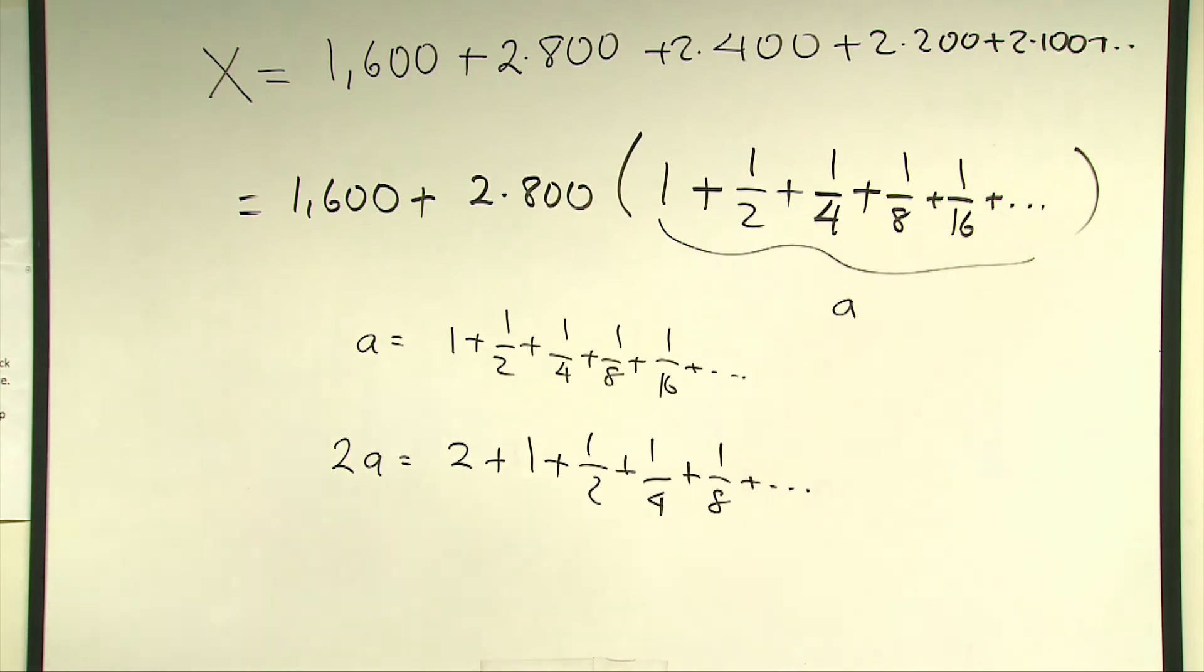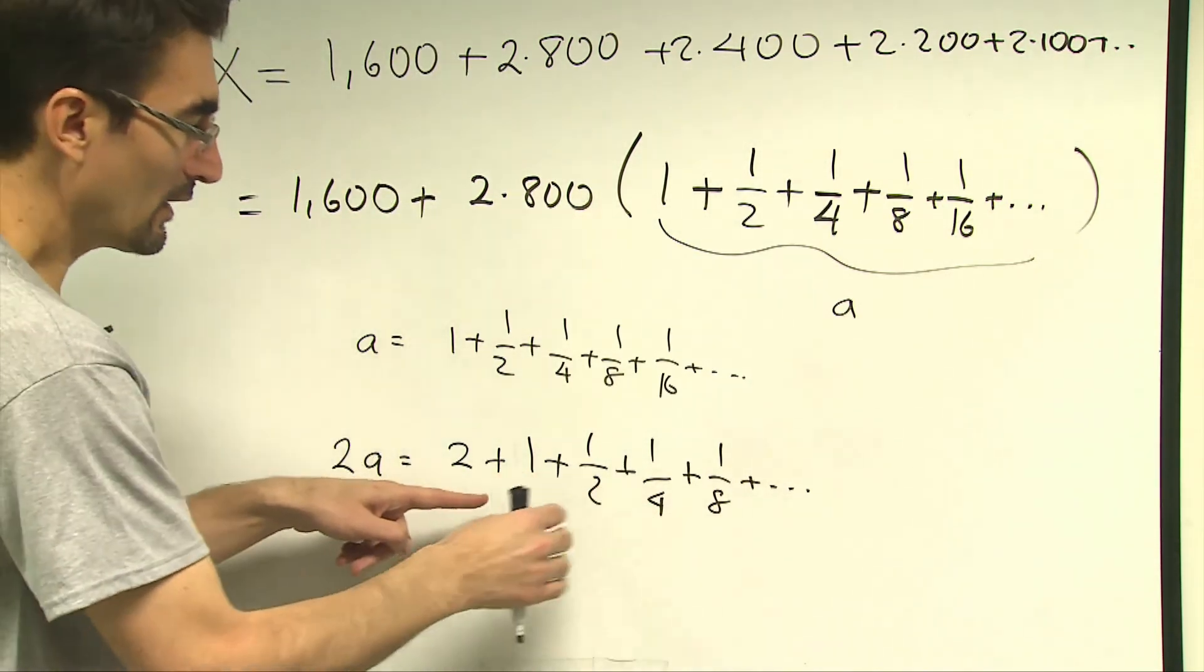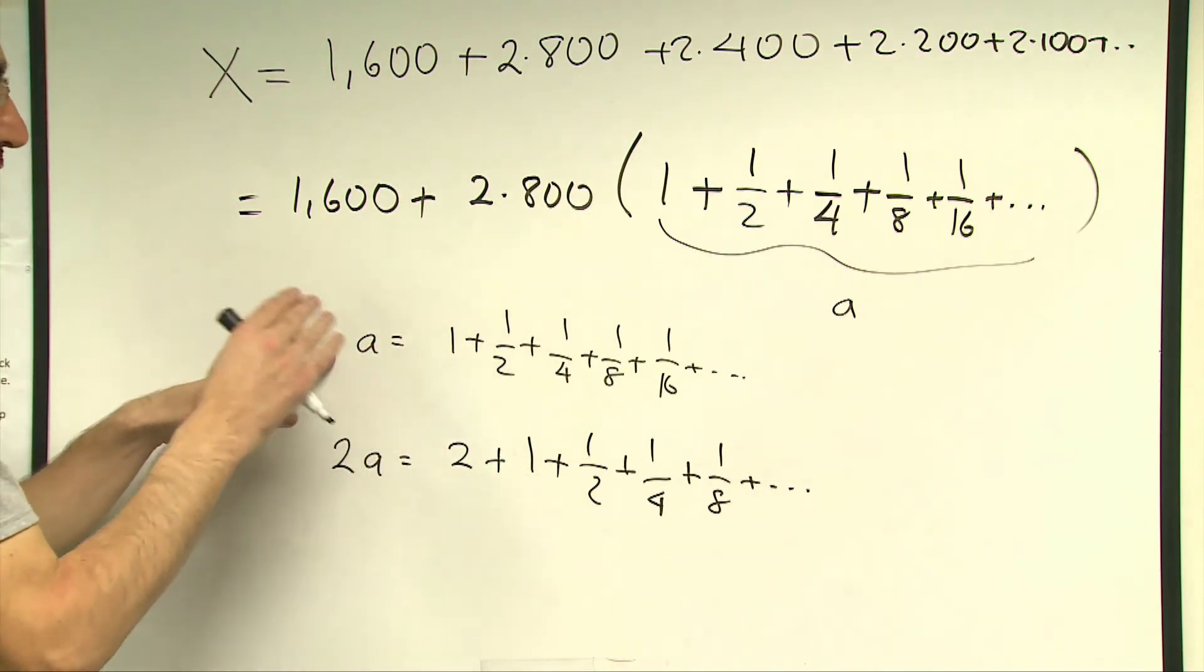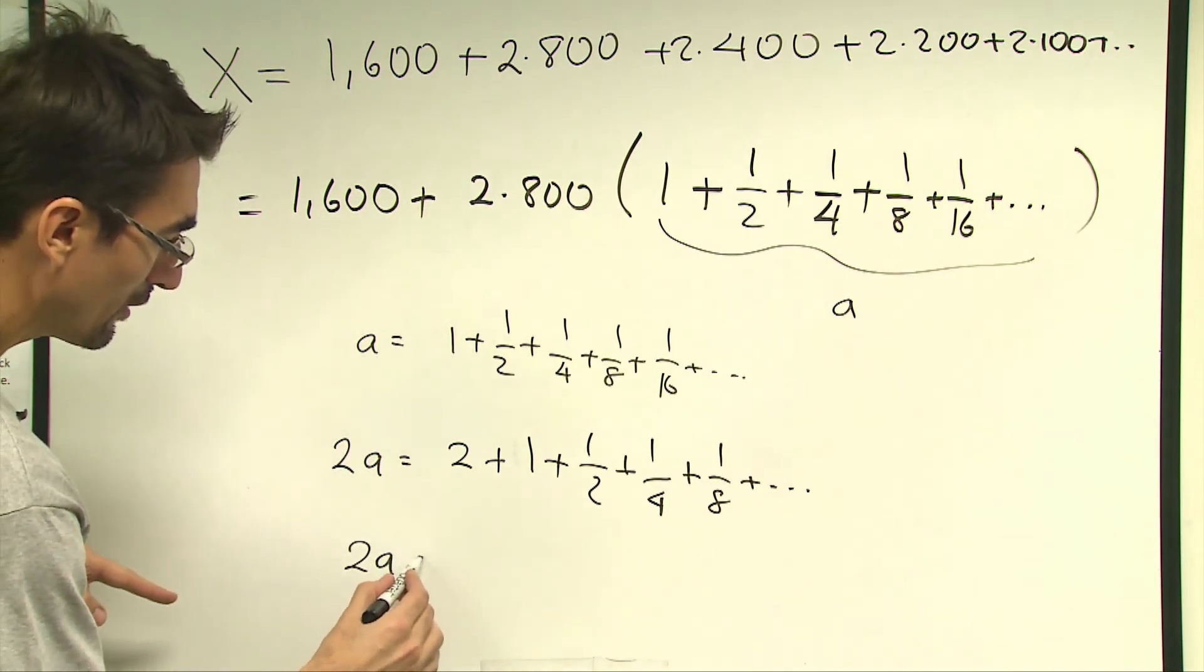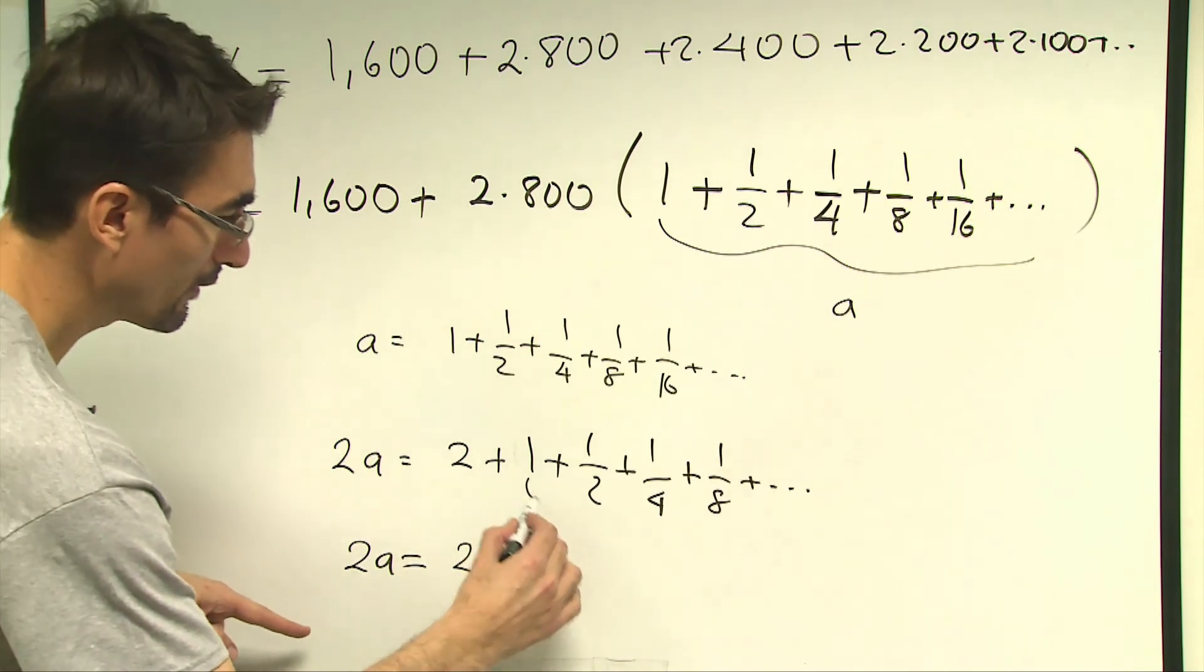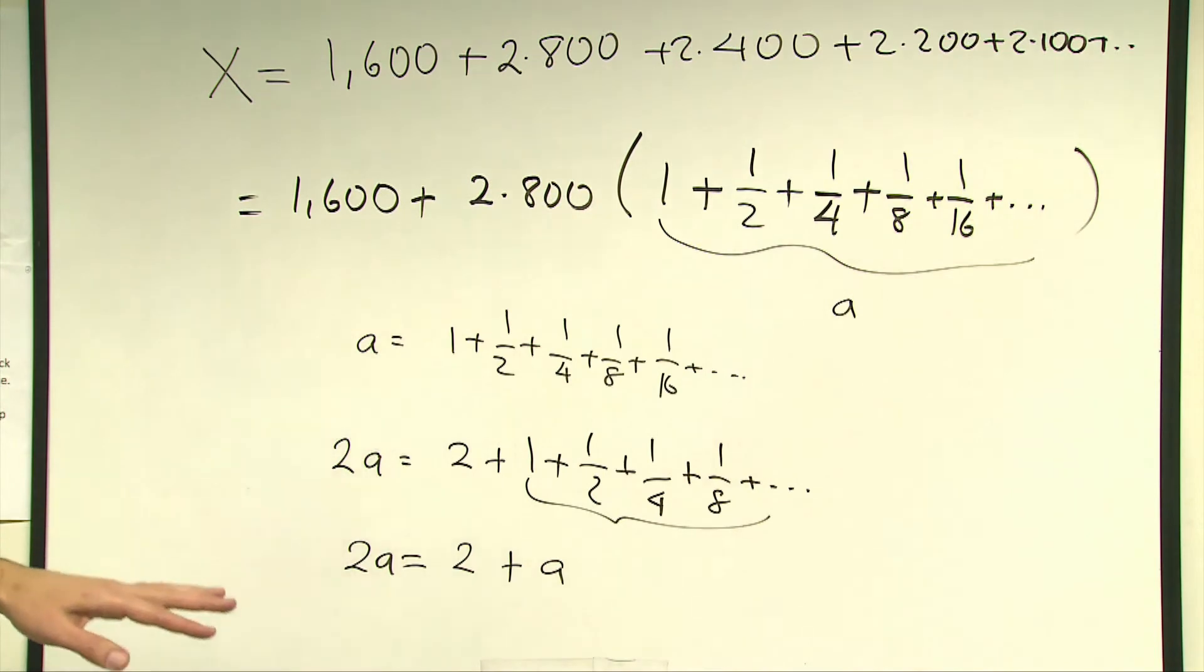So here comes the trick. When you look at the expression after 2, the rest starting with 1 is the same as the expression I also just set up to a. So in other words I can construct my equation to be 2a is equal to 2 plus this portion which is a, so it just came down to a very simple linear equation to solve where a is equal to 2.